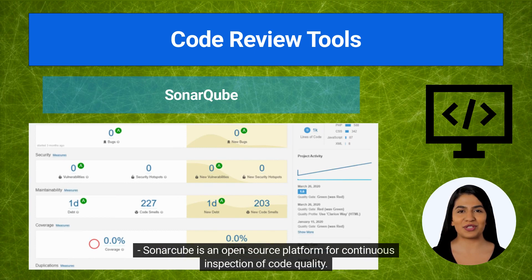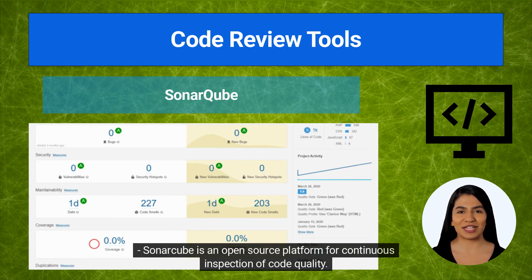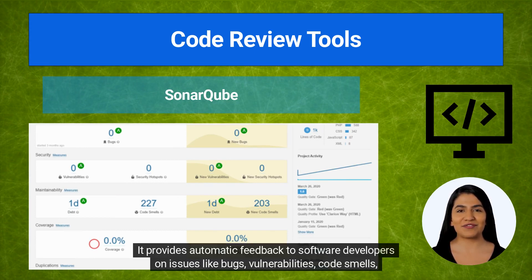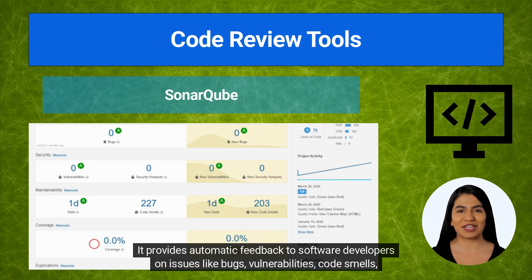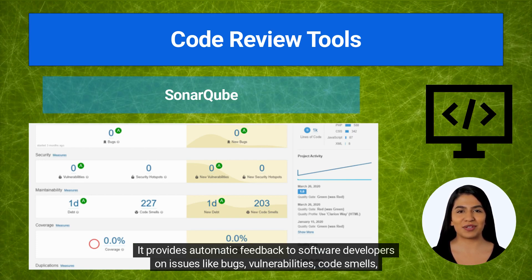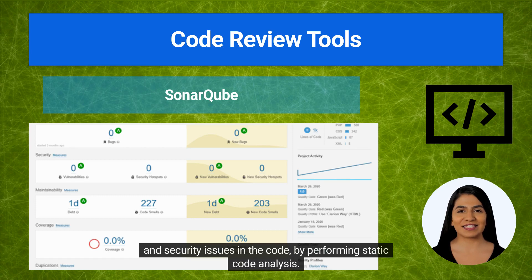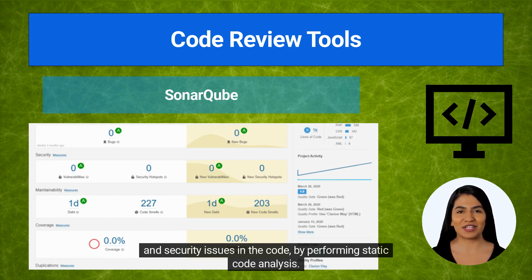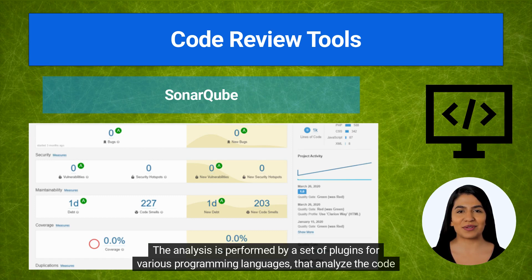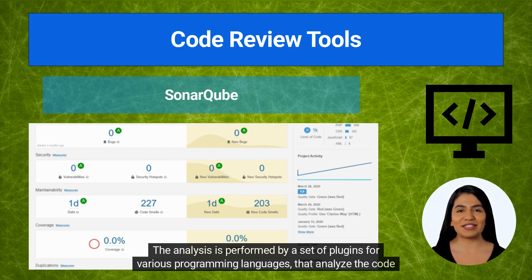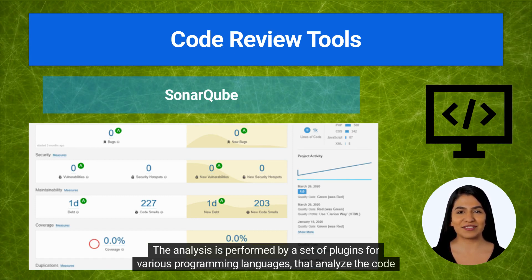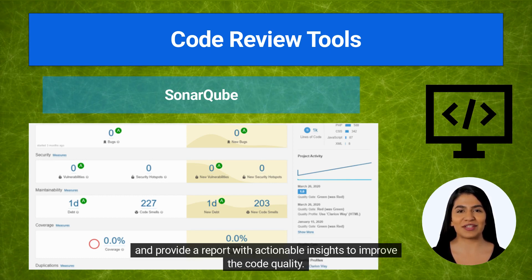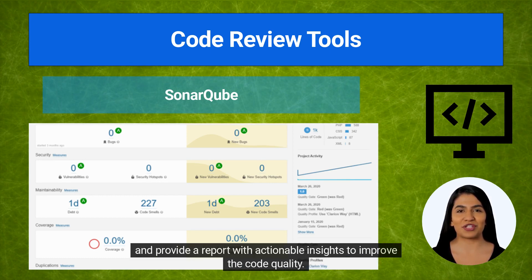SonarQube is an open-source platform for continuous inspection of code quality. It provides automatic feedback to software developers on issues like bugs, vulnerabilities, code smells, and security issues in the code by performing static code analysis. The analysis is performed by a set of plugins for various programming languages that analyze the code and provide a report with actionable insights to improve the code quality.